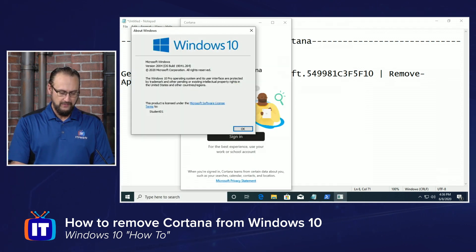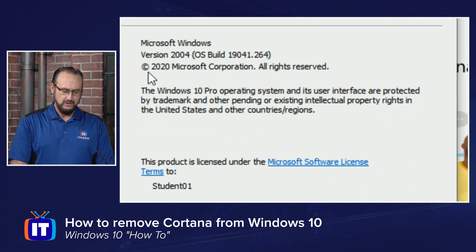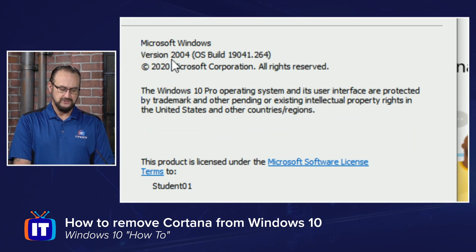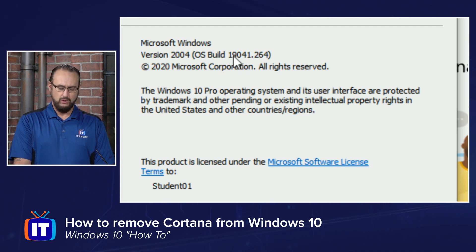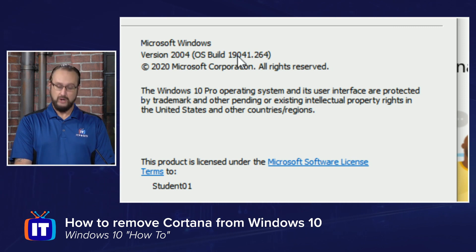When we run that, you'll see that it tells you what the current version of Windows you're running is. To do this, you need the 2004 Build 19041 or greater.